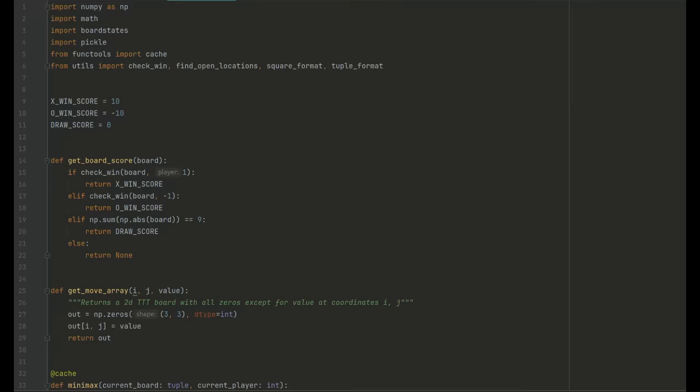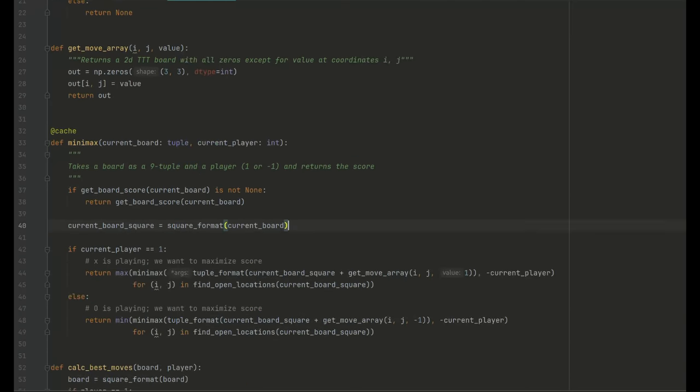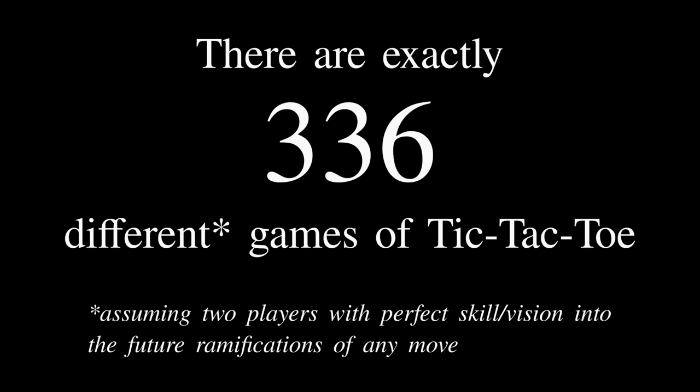Anyway, I built a minimax tic-tac-toe player for this video, and it actually turns out that, assuming two players with perfect skill, perfect visions into the future ramifications of any move, there are 336 different games of tic-tac-toe. And they are all draws.